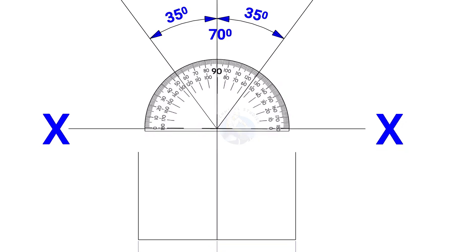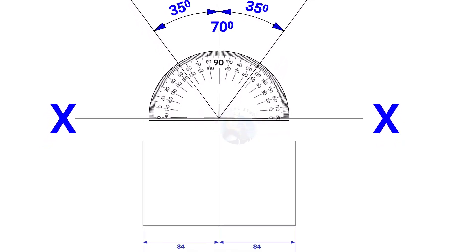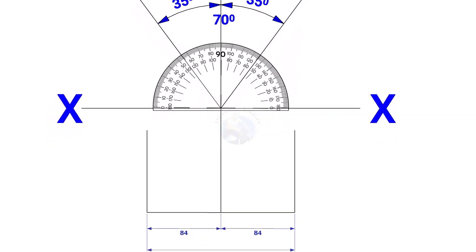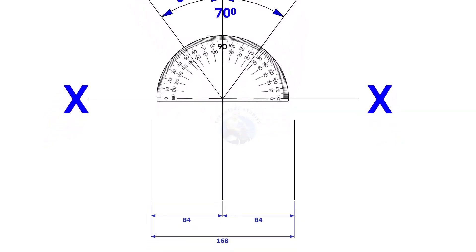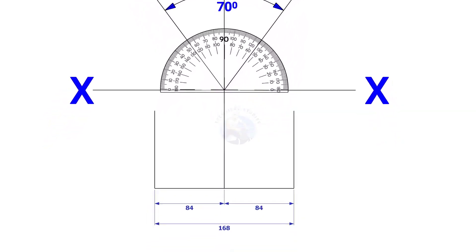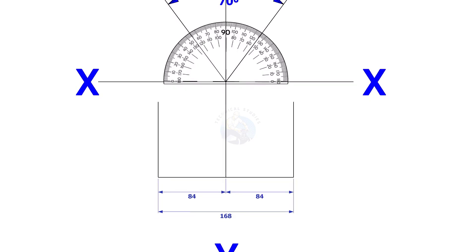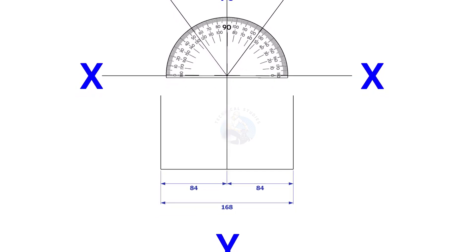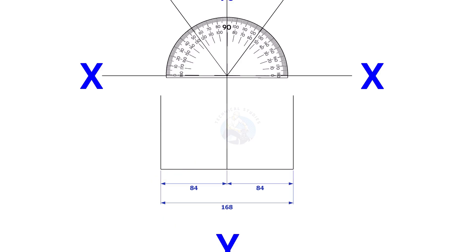Mark 84 millimeters each on both sides of the YY axis — that is the outside diameter of the header. Draw perpendicular lines on these marks as shown.